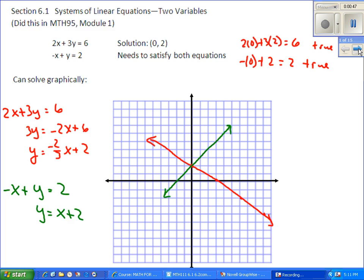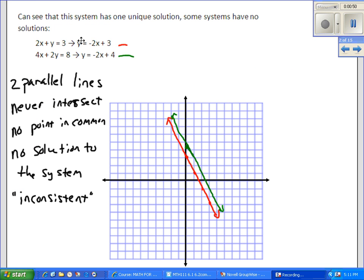Another solving method, oh, sorry, special cases first. That one had one unique solution. Some systems have no solutions in the case where you have two parallel lines. They never intersect. There's no point in common. So we say there's no solution to the system, or we can say the system is inconsistent.